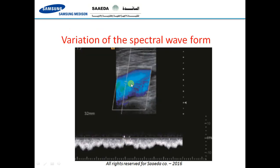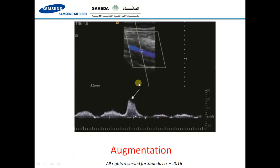There is also variation of the spectral waveform — the normal phasicity of venous blood flow shows a changing flow pattern. Here you can see augmentation: when you compress the calf, there is a sudden increase in the velocity of blood flow in the vein. This is a normal vein with normal augmentation.